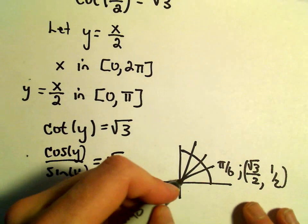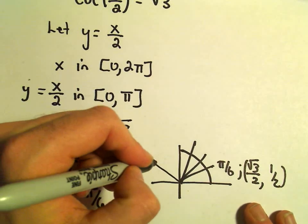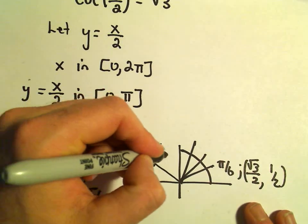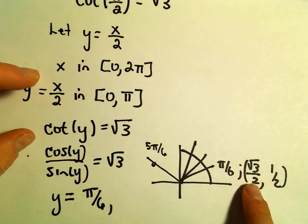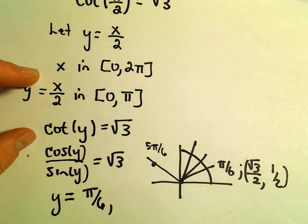Another place where we would get root 3, let's see, almost at 5 pi over 6. But at 5 pi over 6, remember, the cosine is actually going to be negative. The x-coordinate will be negative. So we won't get square root of 3 there.